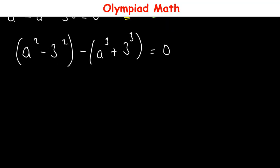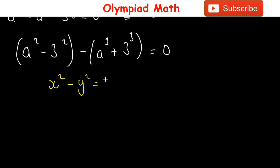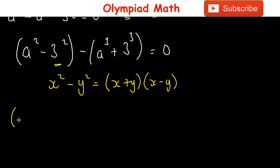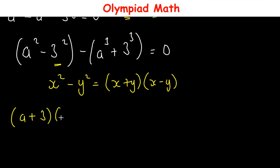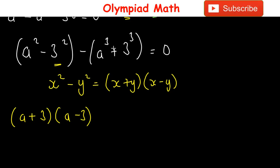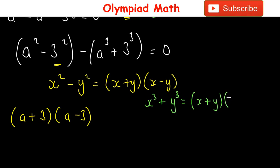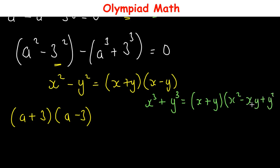We apply the difference of two squares: x² - y² = (x+y)(x-y), giving us (a+3)(a-3). For the sum of two cubes: x³ + y³ = (x+y)(x² - xy + y²).